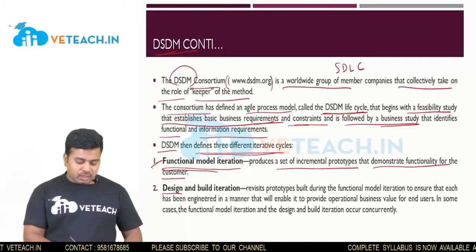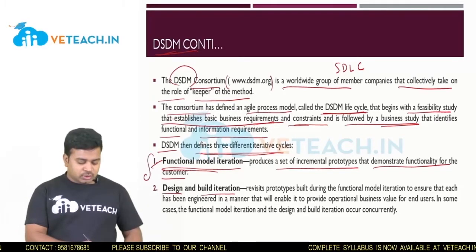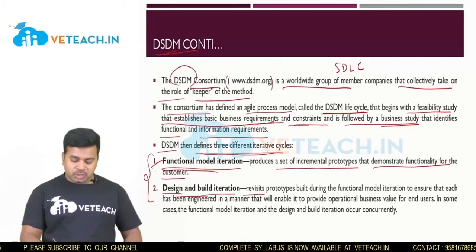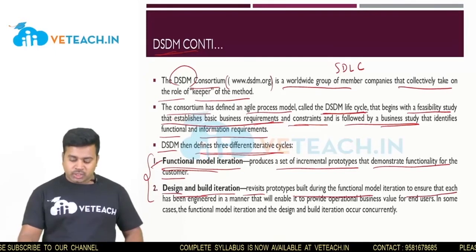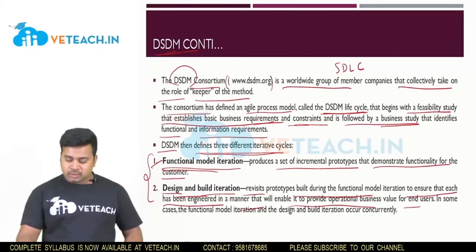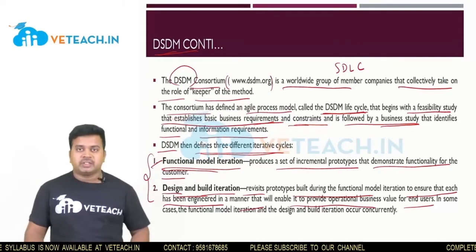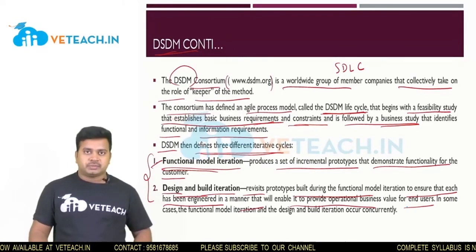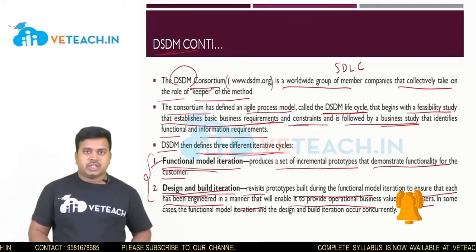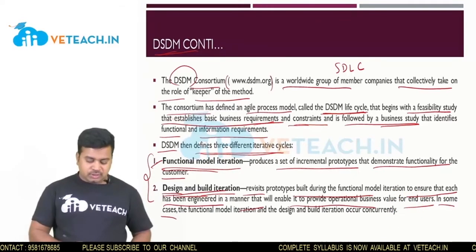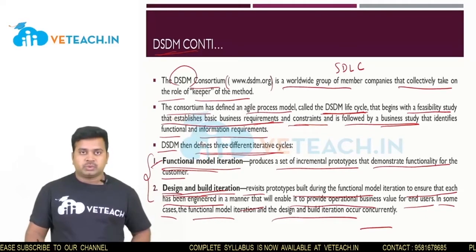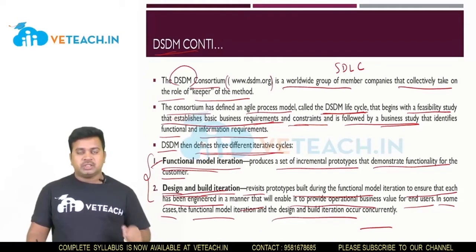The second cycle is the Design and Build Iteration. It revisits prototypes built during the functional model iteration to ensure each has been engineered in a manner that will enable it to provide operational business value to users. It checks whether the previous iteration was properly done and if any changes need to be made. In some cases, the functional model and design and build iterations occur concurrently — in parallel.